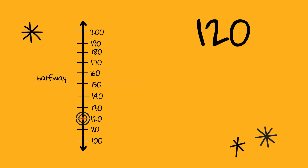Let's try it. The number is 120. Notice the dot on the vertical number line at 120. Is that dot below the halfway point or above the halfway point? 120 is below the halfway point, so we would round to the nearest 100, which is 100.